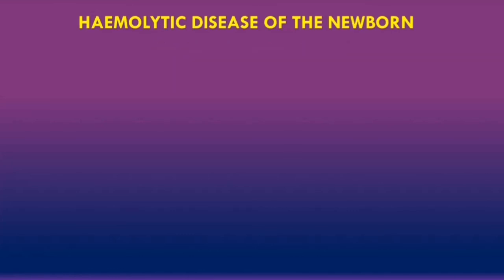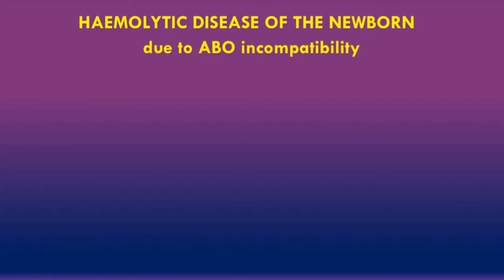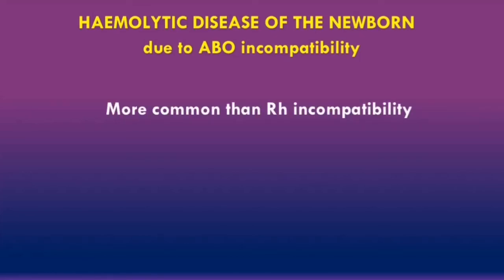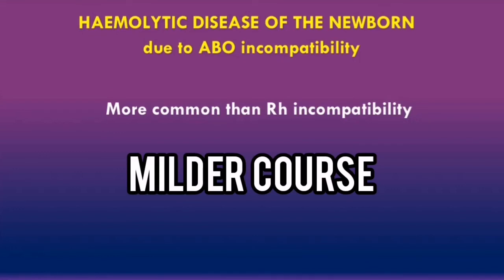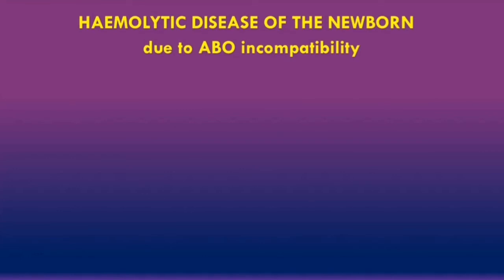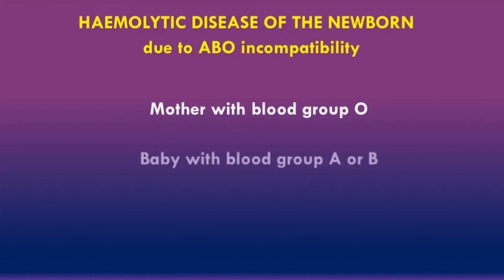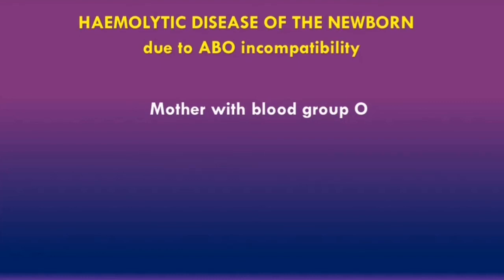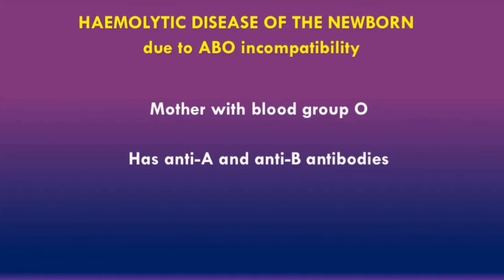Now let's go over the key points related to hemolytic disease of the newborn due to ABO incompatibility. ABO incompatibility is much more common compared to rhesus incompatibility; however, the disease usually has a much milder course and a much better prognosis. This disease typically occurs in a mother with blood group O who has a baby with blood group A or B. As we learned previously, people who are blood group O will naturally produce anti-A and anti-B antibodies and do not need to be sensitized to produce them, which is different from the anti-D antibodies in the rhesus system.